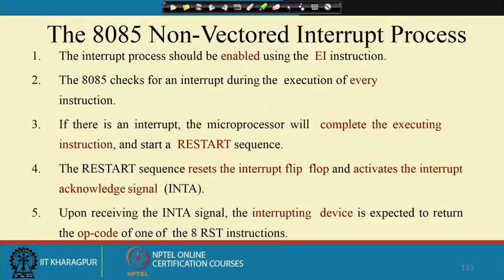An interrupt can occur at any point during execution of instructions by the processor. The processor checks for interrupts at the end of every instruction — typically in the last machine cycle. The interrupt should be activated for at least a complete duration of one instruction. Whatever be the largest instruction execution time, the interrupt must be enabled for that much time to get the interrupt detected.